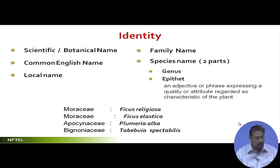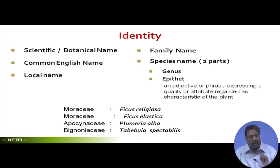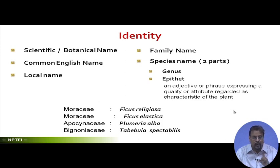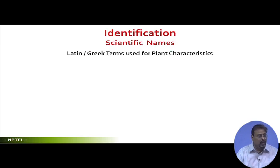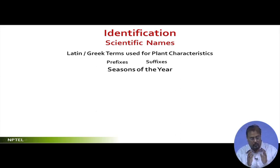What I do is: if I am designing a landscape in a particular region, I try to find out the local language and what that particular tree is called there, and try to record it. Local names are dialectically so variable from region to region that it is not a very scientific approach — it is only for communication, not for technical use. Now coming to the second part: the epithet is an adjective or phrase expressing a quality or attribute regarded as characteristic of the plant.